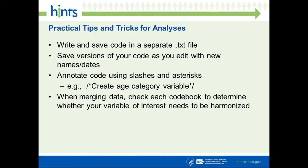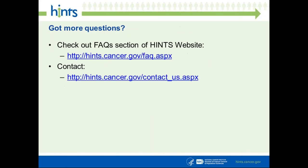Third, annotate your code. This is particularly helpful when working with collaborators — they don't have to wonder what you're doing; they see 'creating an email doc variable.' It also helps you if you come back after months away. Finally, when merging data, check each codebook to make sure you're harmonizing variables appropriately — ensure seek_health_info, health_info, and seek_info all line up in your new merged dataset, with missing values coded correctly. And verify your merge by running an analysis on an individual cycle, then running the same analysis on the merged dataset with a subpop subset — if you get the same results, the merge is correct.